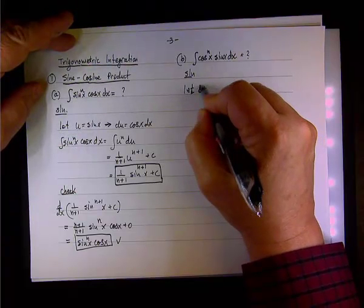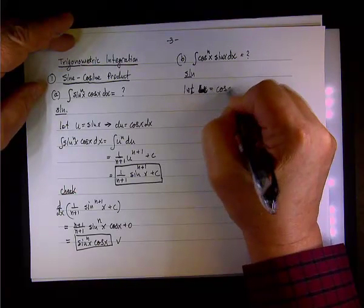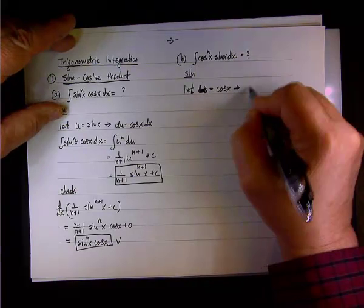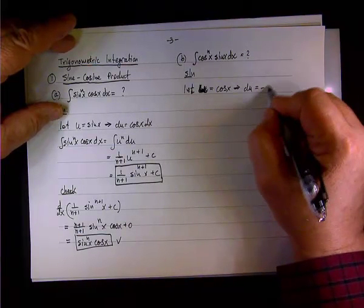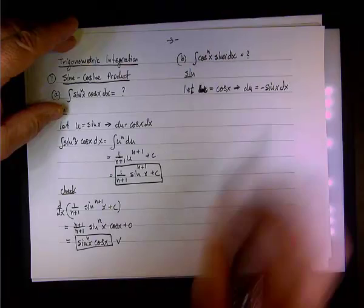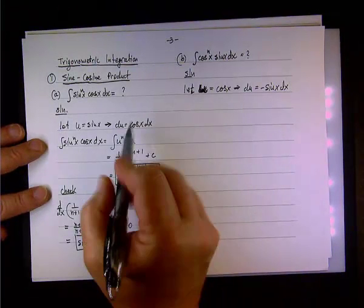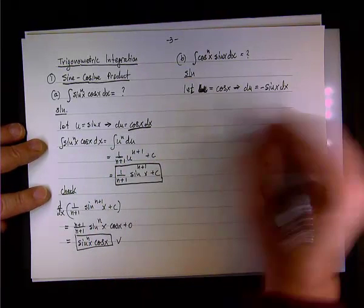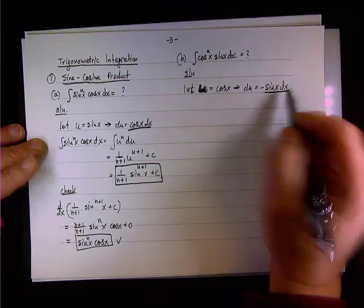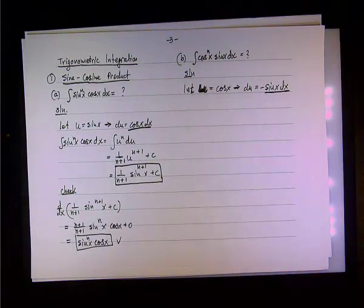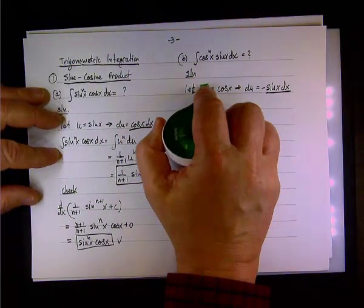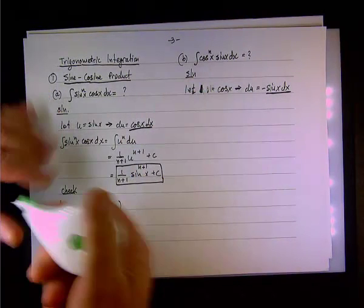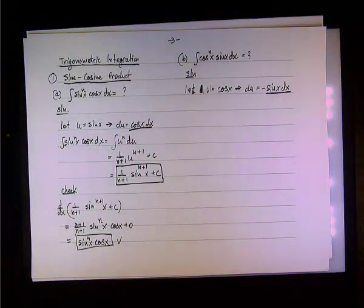Let u equal cosine x. That will be the substitution. Therefore, du equals negative sine x dx. Notice that in both cases we were looking for a differential that is cosine x dx or sine x dx. This will be the guiding line throughout the section of trigonometric integration — instead of looking at the differential dx, we're going to look at a differential that is a product: cosine x dx or sine x dx.